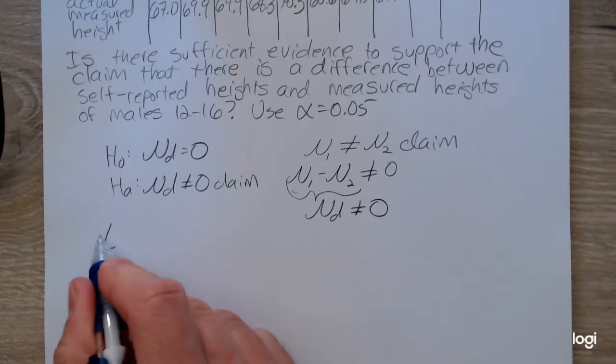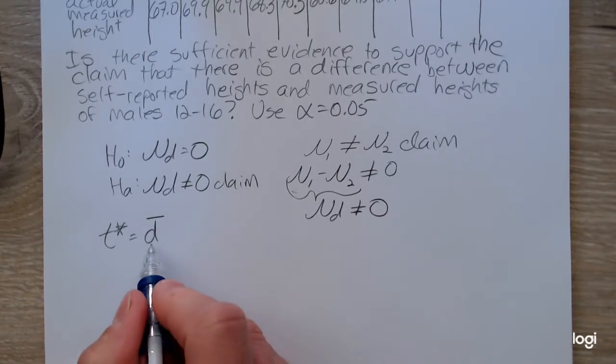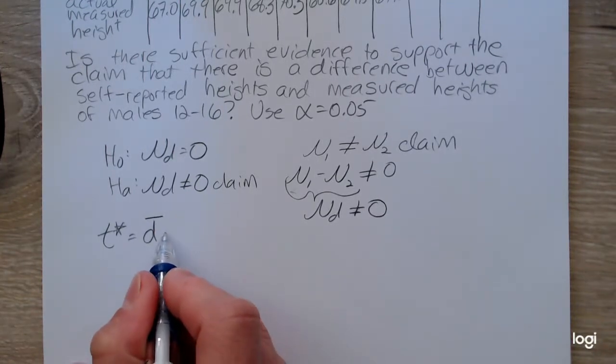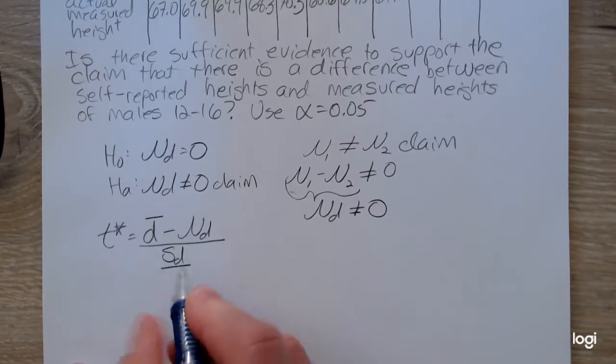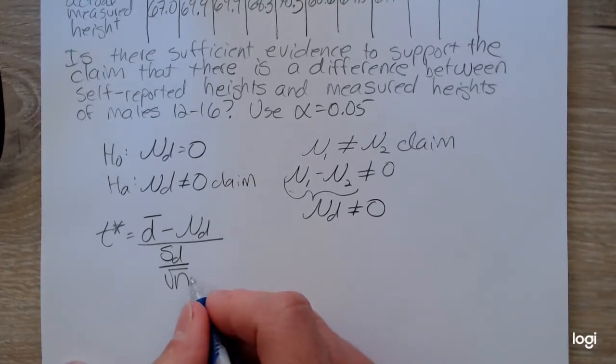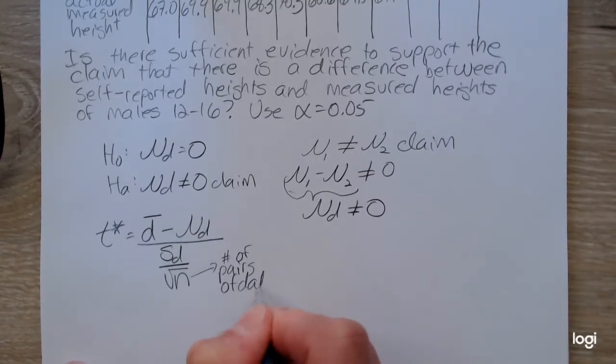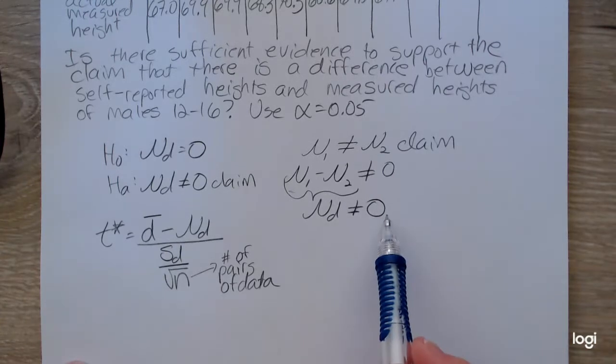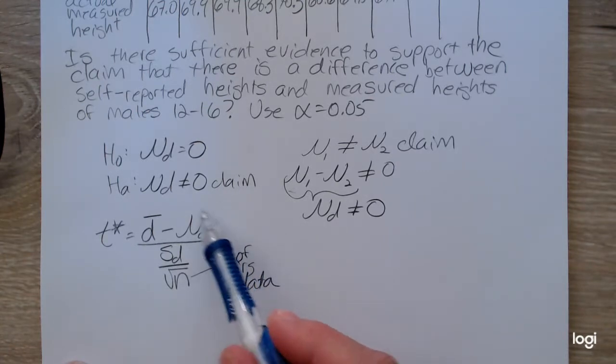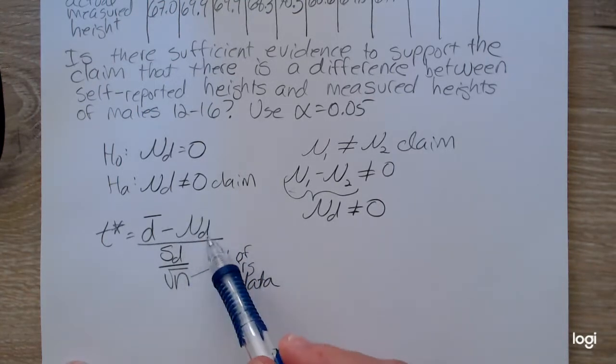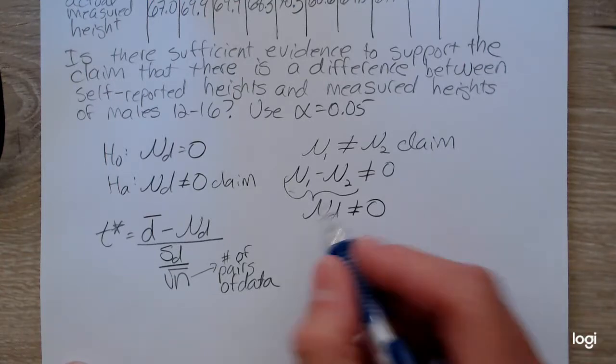The test statistic formula is d bar, the sample mean for the differences, minus the hypothesized difference over the standard deviation over the square root of n, where n is the number of pairs of data. Looking at the value on the right side of the hypotheses, the claim difference will be 0. We know n is 10, the number of pairs.